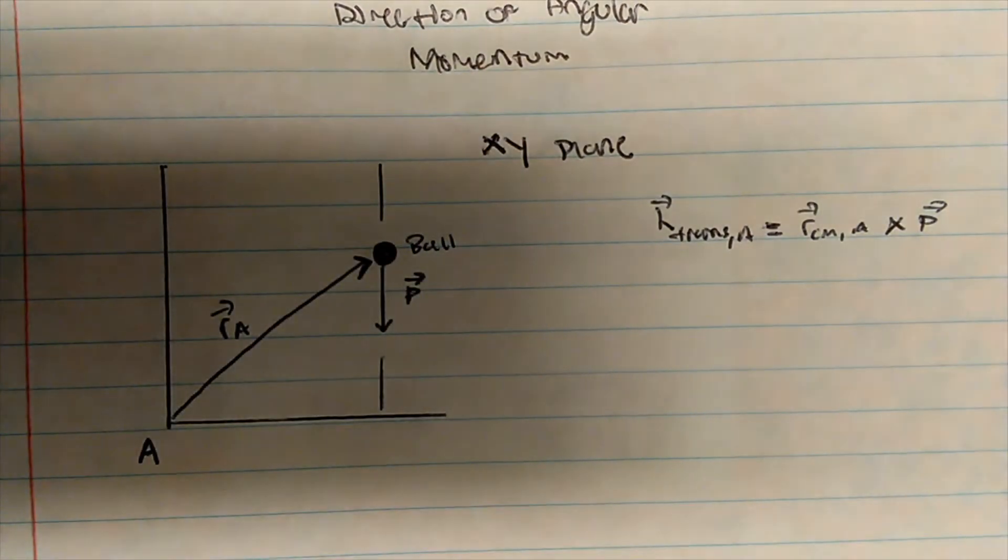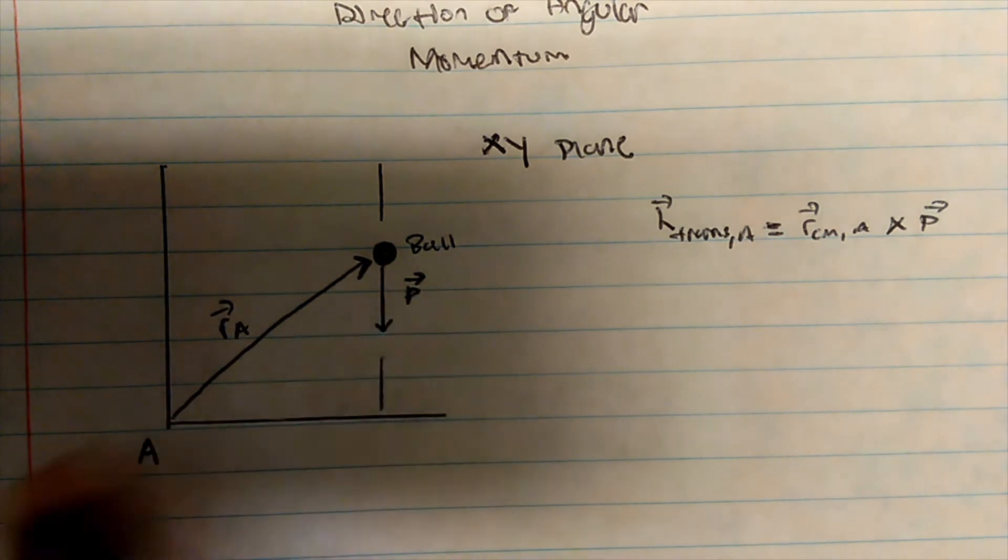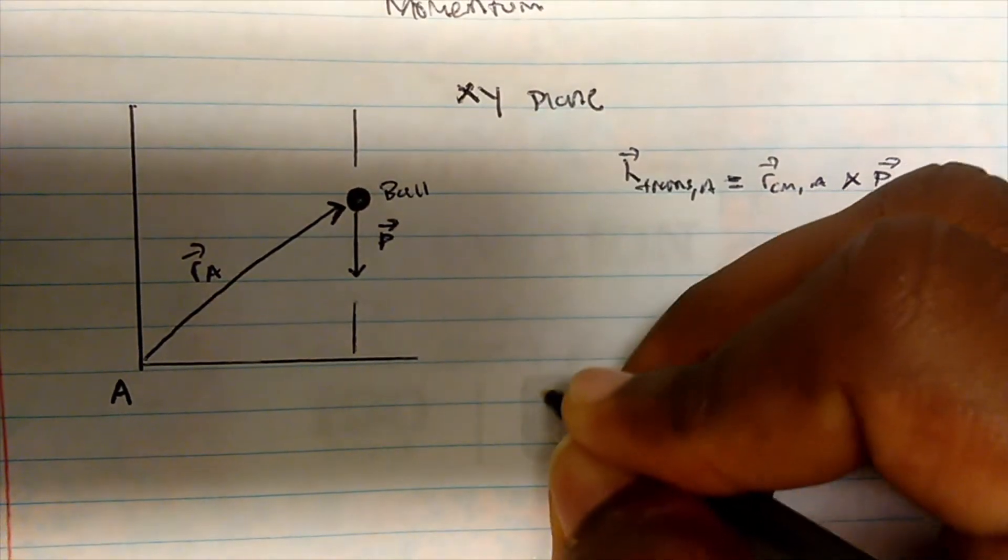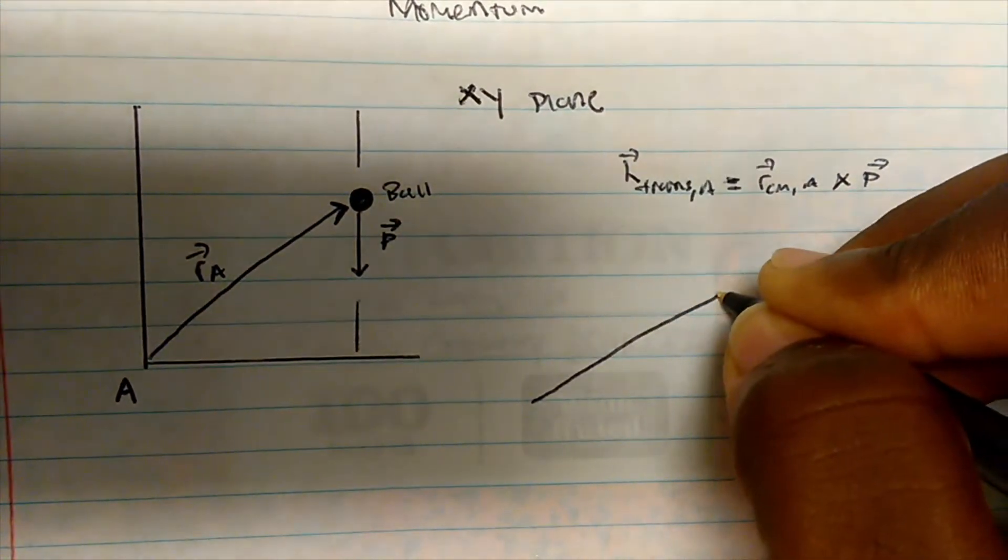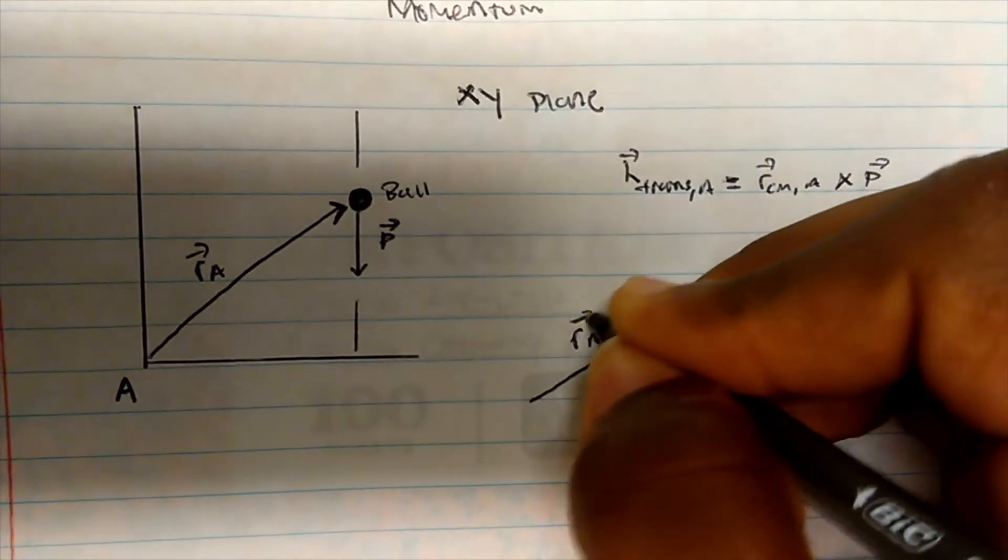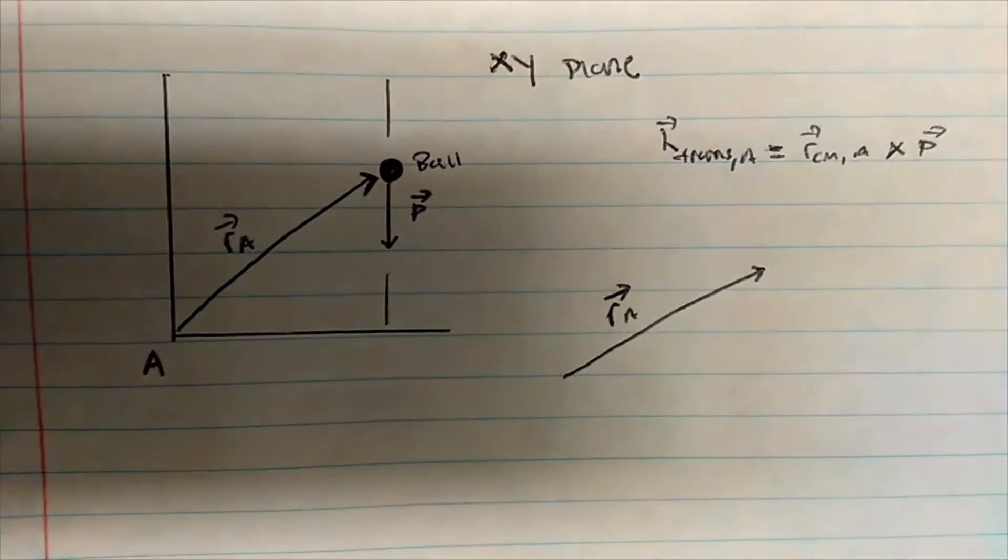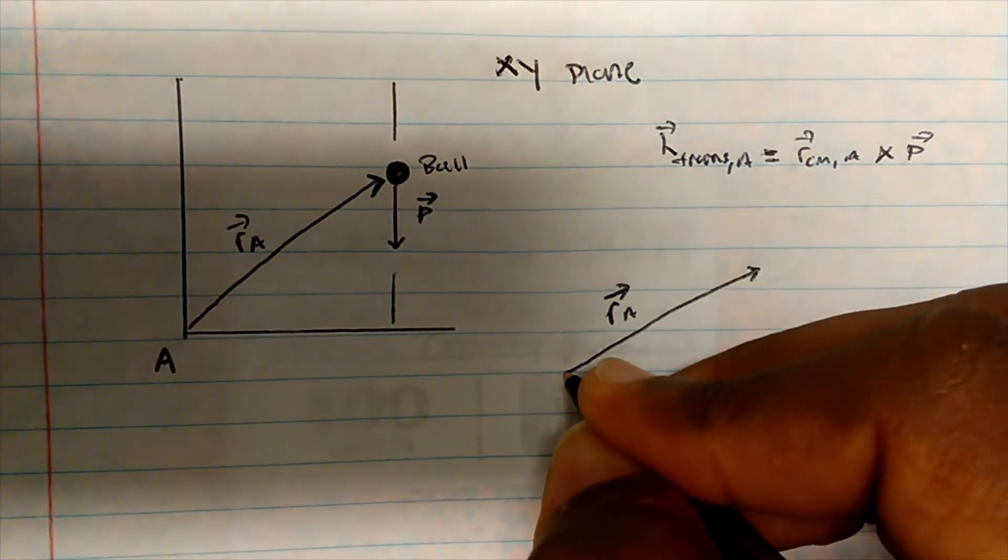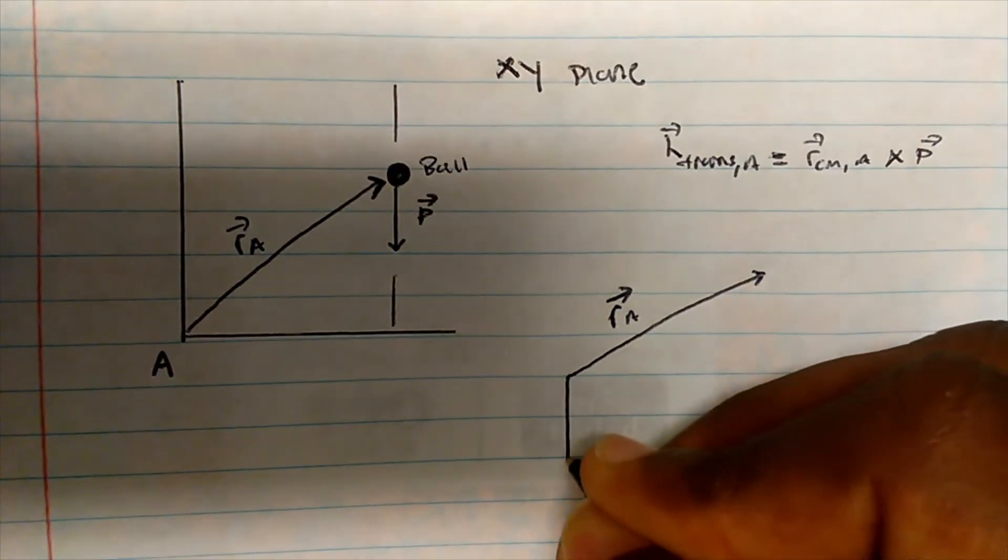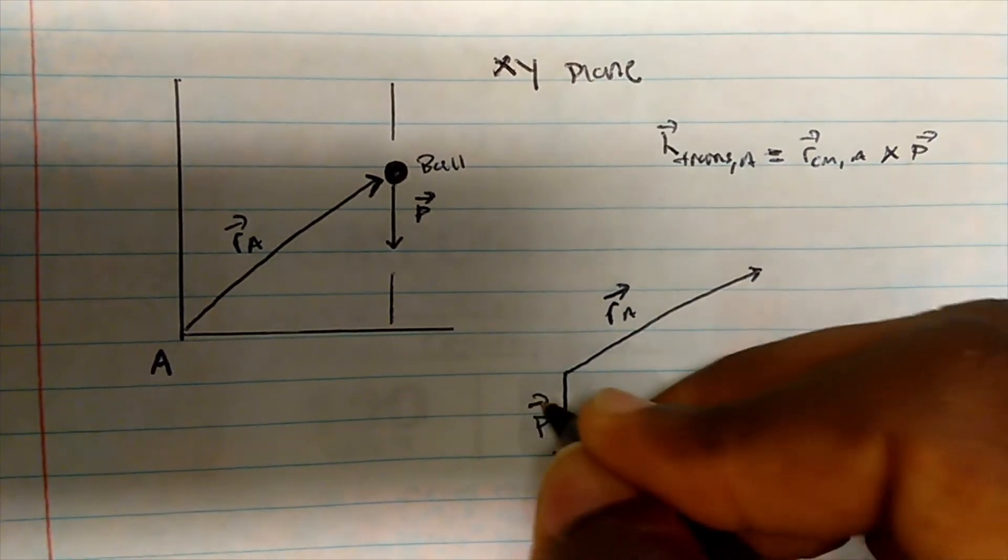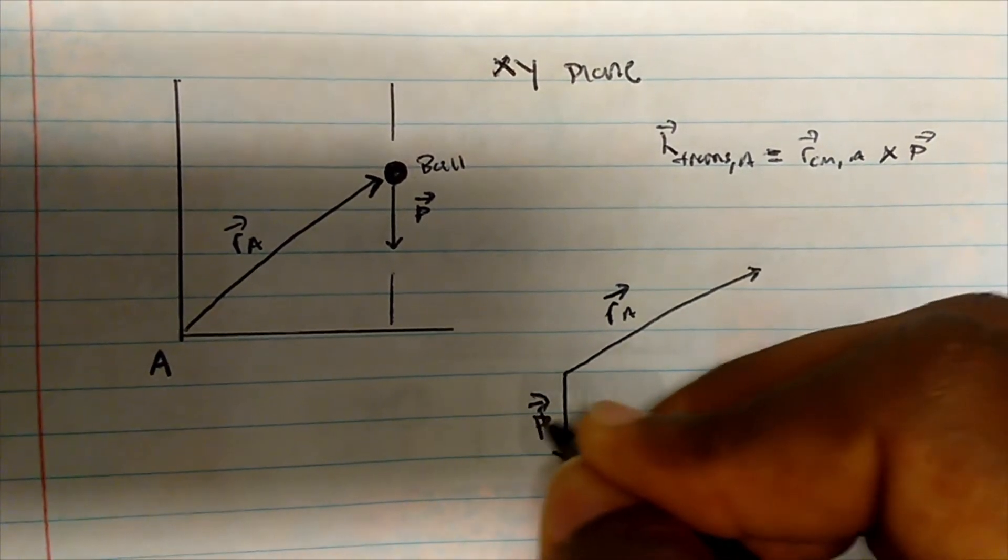Now, the rule says you take both these vectors and put them tail to tail. You take both these vectors and put them tail to tail. So if I look at this, here's my RA. And then I just simply put the momentum at the tip. So tip to tip, so the momentum now will be here. So here's my momentum.